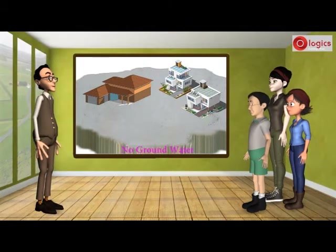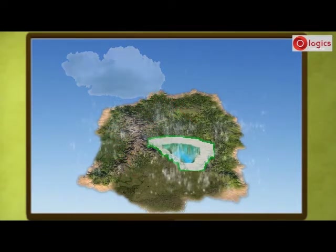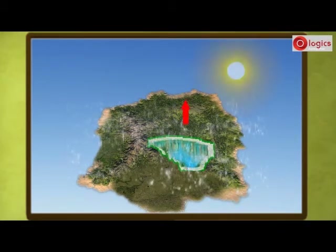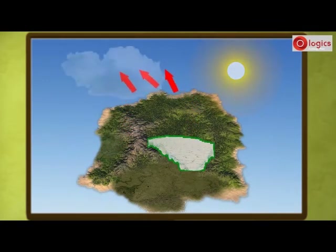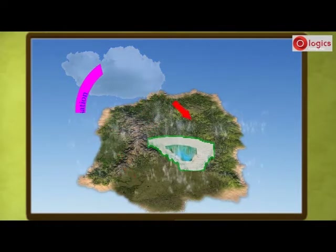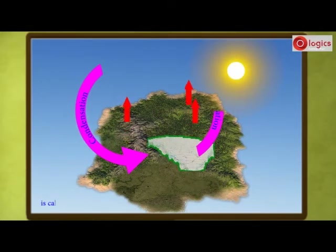What do you understand about the water cycle? Due to condensation of clouds, rain forms, and it becomes a source of water on the ground. Ultimately all the water is evaporated due to the sun's heat, and again clouds are formed. The cycle of processes by which water circulates between the earth and its atmosphere is called the water cycle.